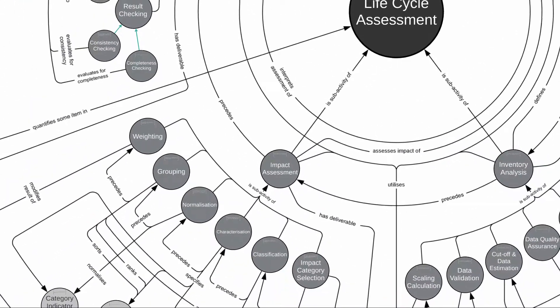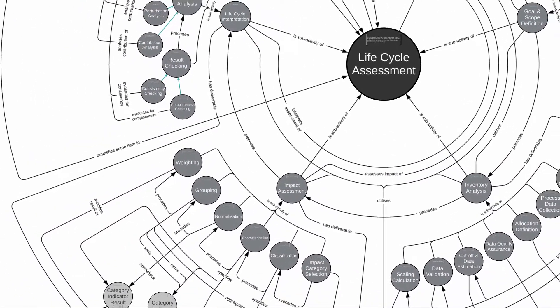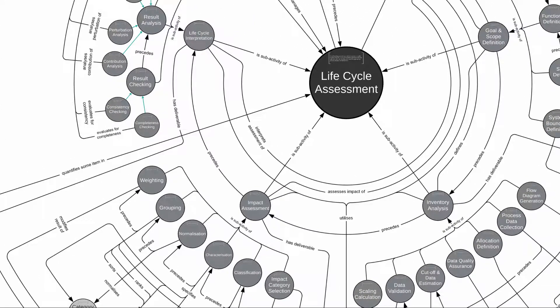For instance, we have relations like assesses impact of, is sub-activity of, proceeds, etc., joining the concept impact assessment to other concepts in the model, like product system, and so on. So, what we're particularly after in this phase of LCA is the whole idea of the impact. And in order to figure out what the environmental impact is, we need to consider a number of things.